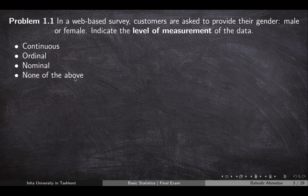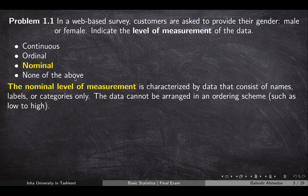The first question: we're going to collect data from customers of a web service. They need to provide their gender — male or female — and we're asked to indicate the level of measurement of this data. We are going to measure this data on the nominal level. The nominal level of measurement is characterized by names, labels, or categories — data which cannot be sorted or ordered in any way.